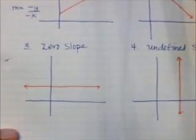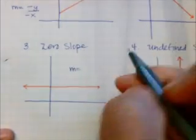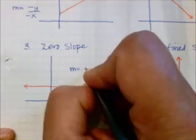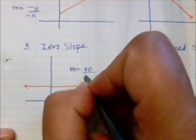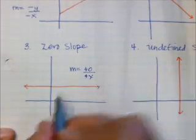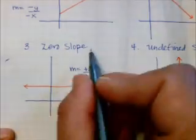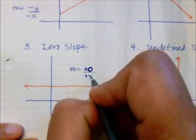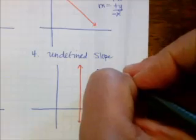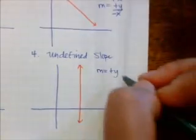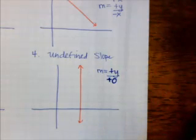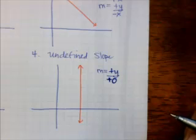With a zero slope, there is absolutely no change on the Y — zero on the Y — but it can increase by anything on the X. It keeps moving across but doesn't move up or down at all. For the undefined slope, it's the opposite: it increases a lot on the Y, but there's no change at all on the X. Those are your four different types of slope.